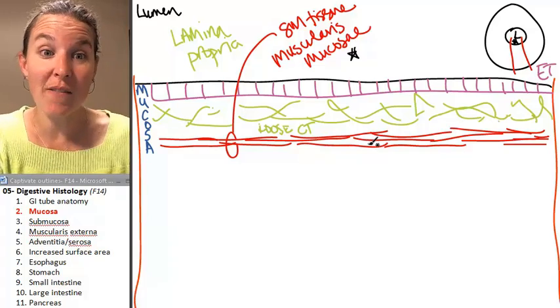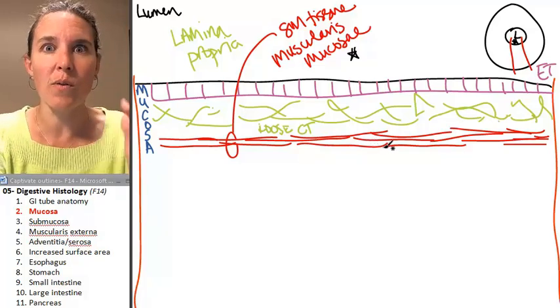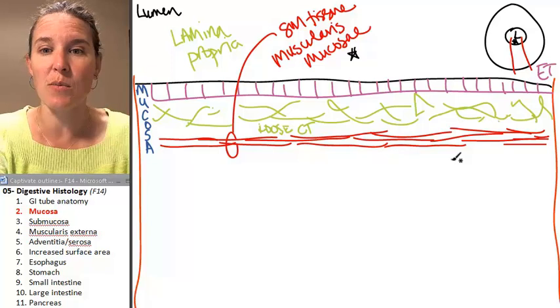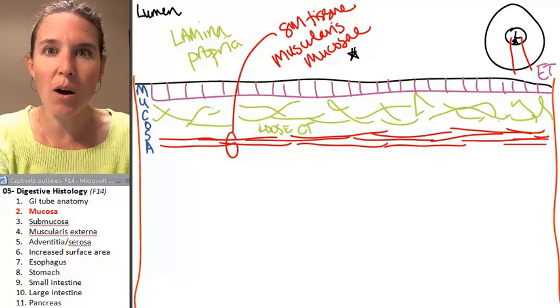That's it. Those are your parts of the mucosa. Now, the next layer is deep to the mucosa and we're going to talk about that next.